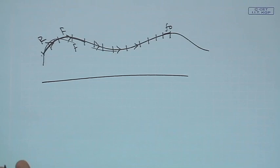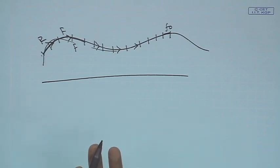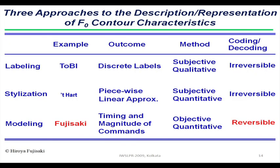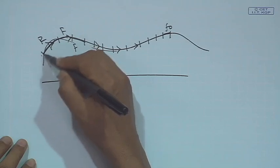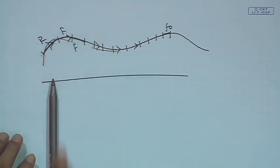So the whole sentence F0 can be modeled using three models — one is called ToBI, stylization, and model. ToBI is nothing but assigning some label on F0. It may be at syllable level or word level. So I can say this is rising, this is flat, this is falling. Then I can define the pattern of rising — it is sharp rising, it is flat rising. Those kinds of things are used in the ToBI model.